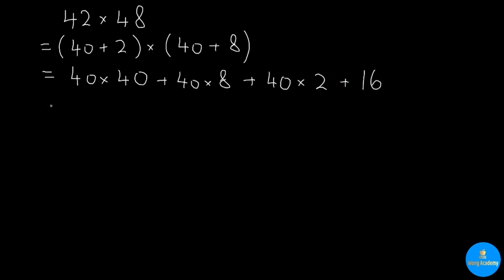Alright, what do I do next? Next, I'm going to keep 40 times 40 unchanged. But for the next two terms, I notice that 40 is actually a common factor. And so I'm going to rewrite it as 40 times a pair of parentheses, 8 plus 2. This is the process of taking out the common factor 40. Finally, don't forget plus 16.